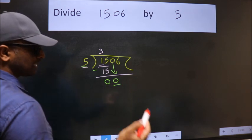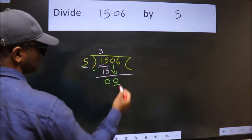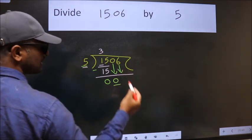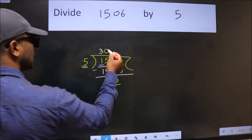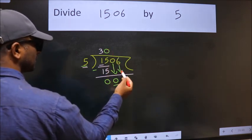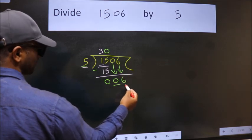So, we should bring down the second number. And the rule to bring down the second number is put 0 here. Then only we can bring this number down. So, 6.